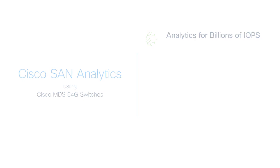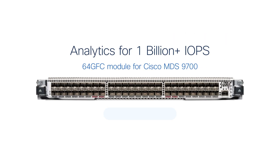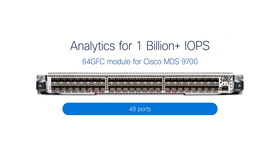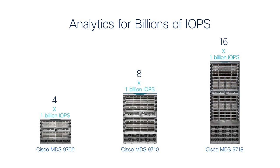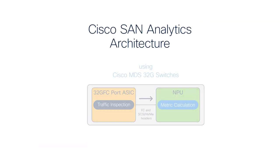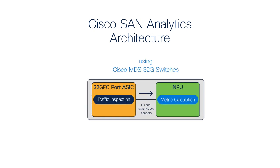The first benefit is that the 64-gigabit MDS switches can provide visibility into more than a billion I/O operations per second, and this is just for 48 ports on a single module. Based on whether you have a 4-slot, 8-slot, or 16-slot director, the analytics performance multiplies accordingly.